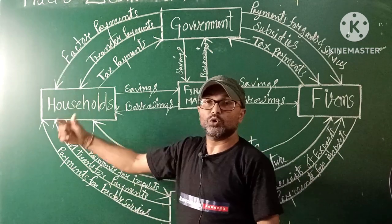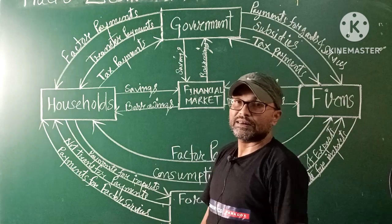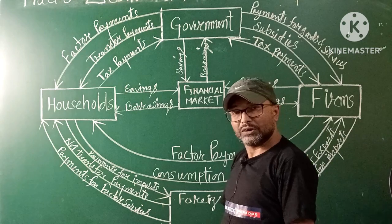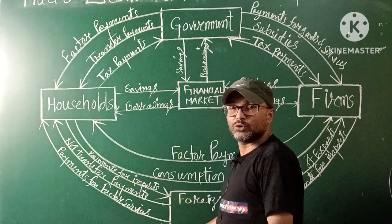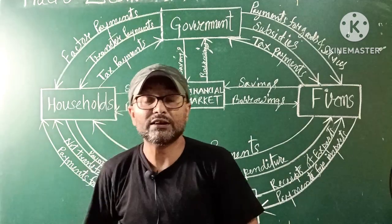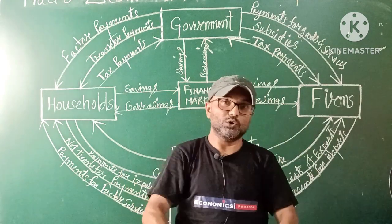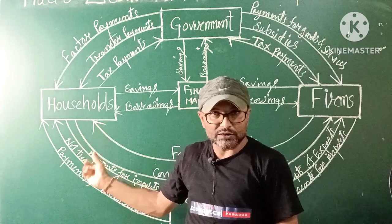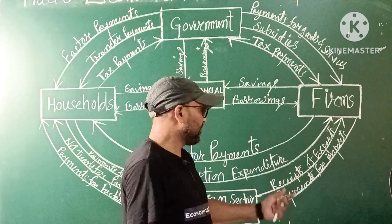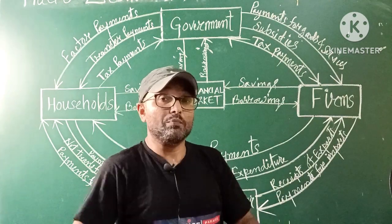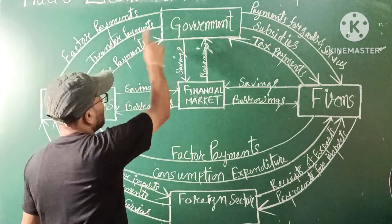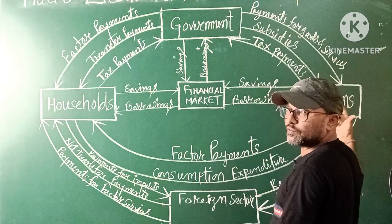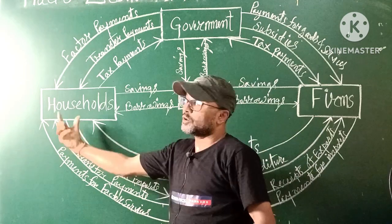The foreign sector has relations with households and firms. Due to inflow and outflow: inflow includes payments for factor services and net transfer income payments, and outflow includes payments for imports. So the foreign sector connects to both firms and households. The other three sectors — household, firms, and government — their concepts are already established.